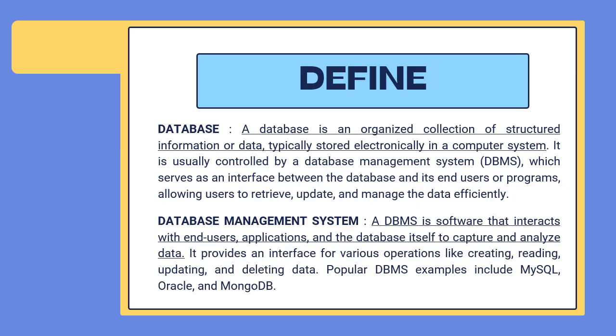Another two important terms are database and database management system. A database means it is an organized collection of structured information or data, typically stored electronically in a computer system. It is usually controlled by a database management system, which serves as an interface between the database and its end users or programs, allowing users to retrieve, update and manage the data efficiently.